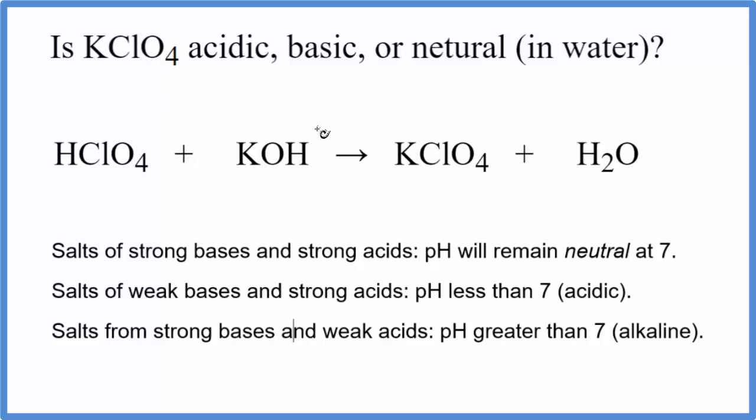To do that, we need to know the neutralization reaction that produces the potassium perchlorate. So we have, in this case, HClO4 plus KOH. When these react, they produce our potassium perchlorate, KClO4, plus water, since it's a neutralization reaction.